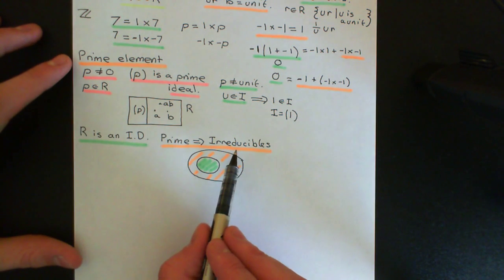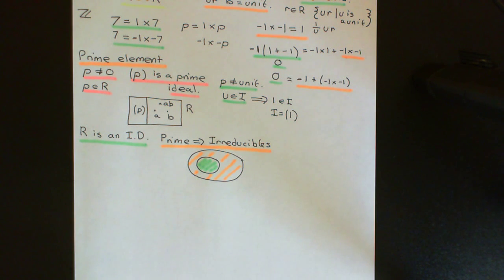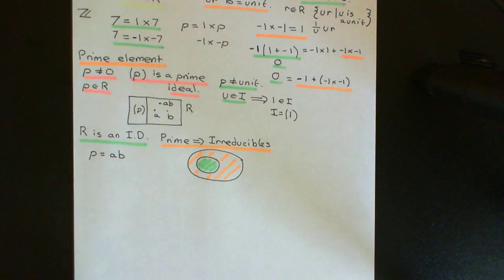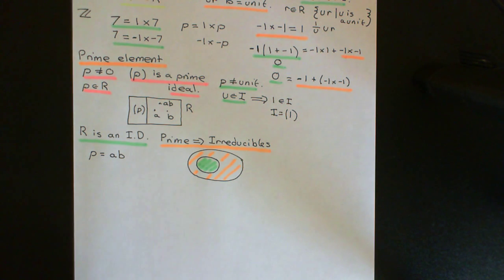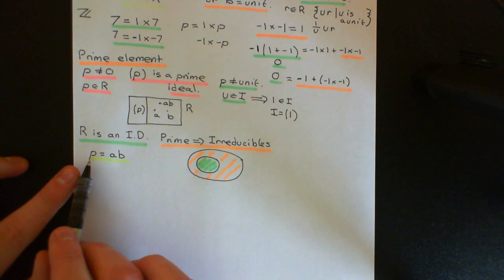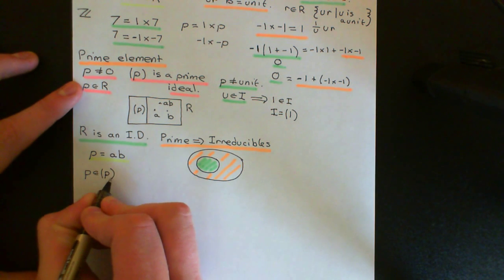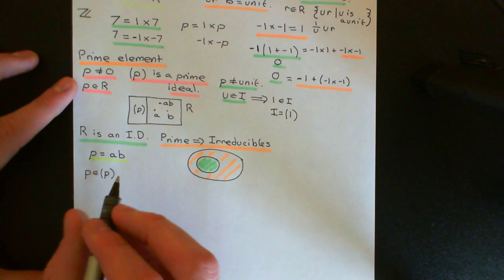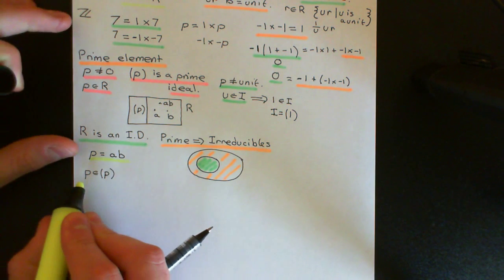We want to prove that if we have two things multiplying to give p, so let's say p is our prime element and we have a product of two elements a and b from our integral domain multiplying together to give the prime p, then one of these has to be a unit. We can now use the fact that p is a prime: its principal ideal is a prime ideal, and that tells us that if two elements multiply together to give an element of that ideal, then one or both of them have to be within the ideal. Since p is an element of the principal ideal generated by p, we can conclude that at least one of a or b has to be within that principal ideal.